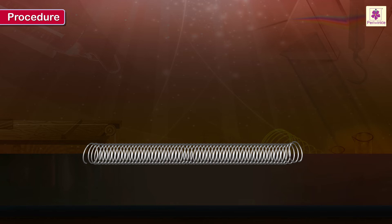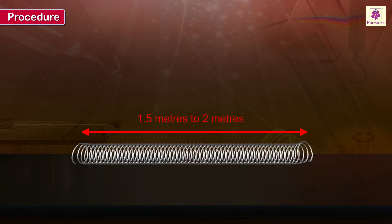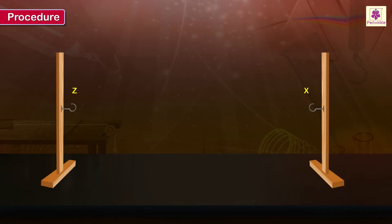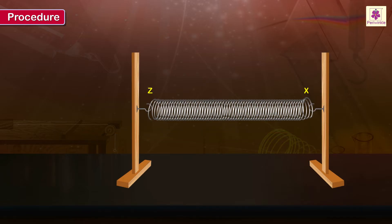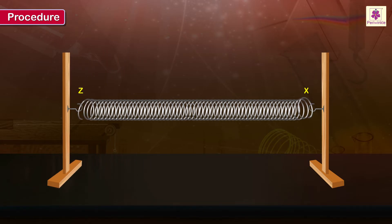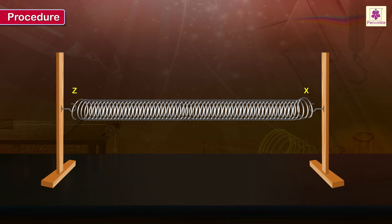Take a slinky that can be easily stretched to a length of about 1.5 to 2 meters. Fix 2 sturdy clamps on the table so that the distance between them is about 1.5 to 2 meters. Firmly fix the two ends of the slinky to the two clamps. Adjust the distance between the two clamps to obtain a moderate tension in the stretched slinky and a uniform distance between the turns. Cut 3 small pieces of colored paper.